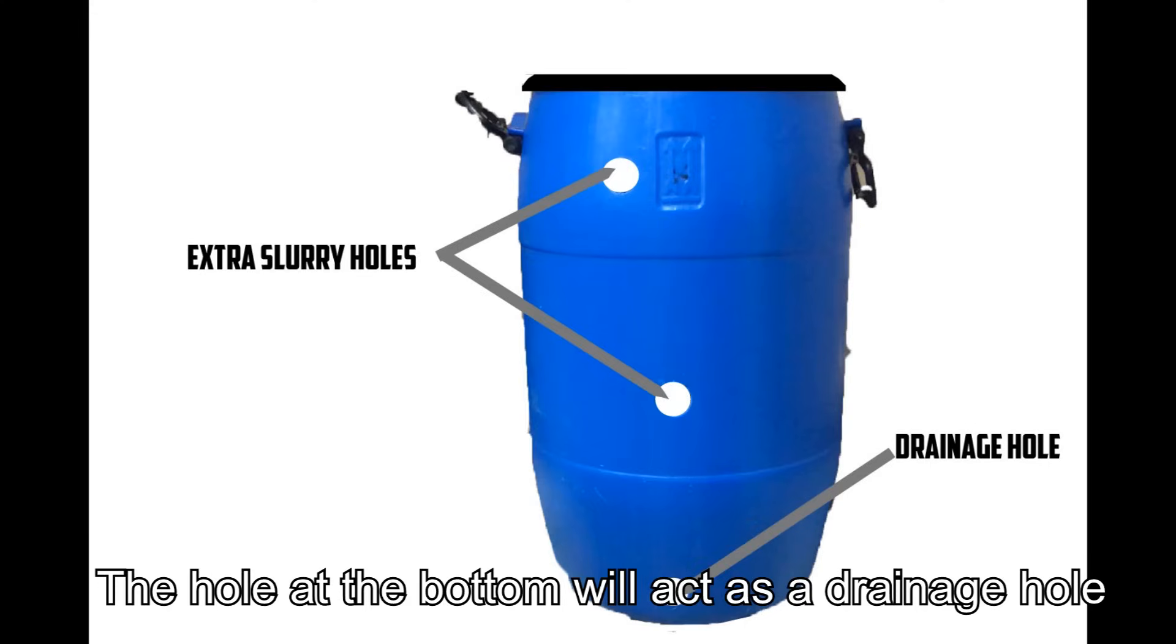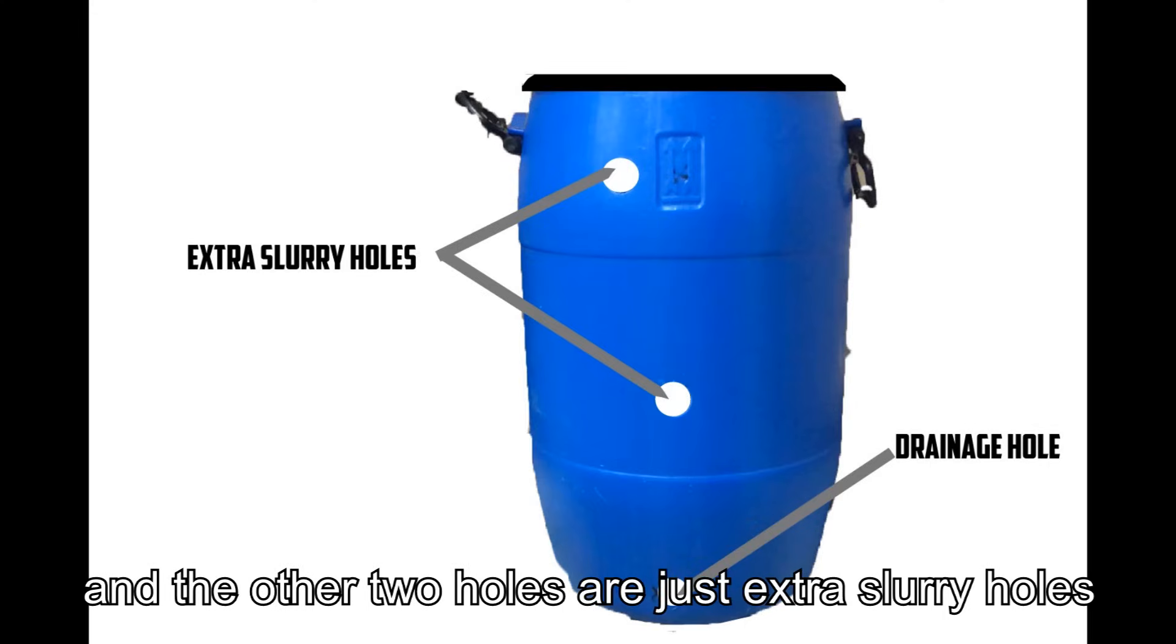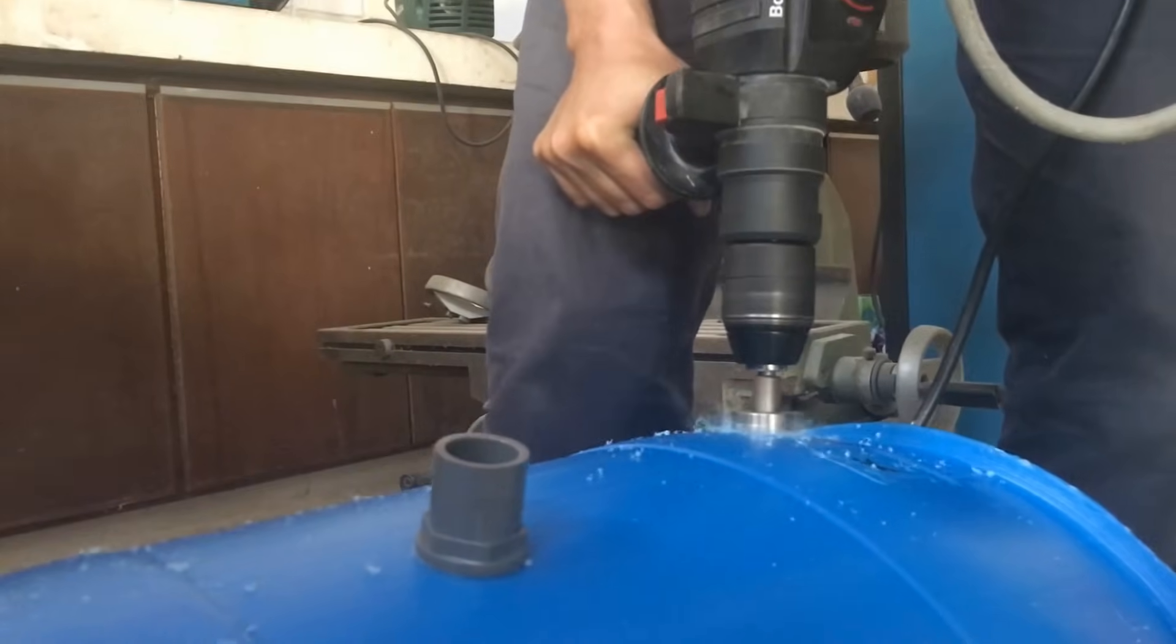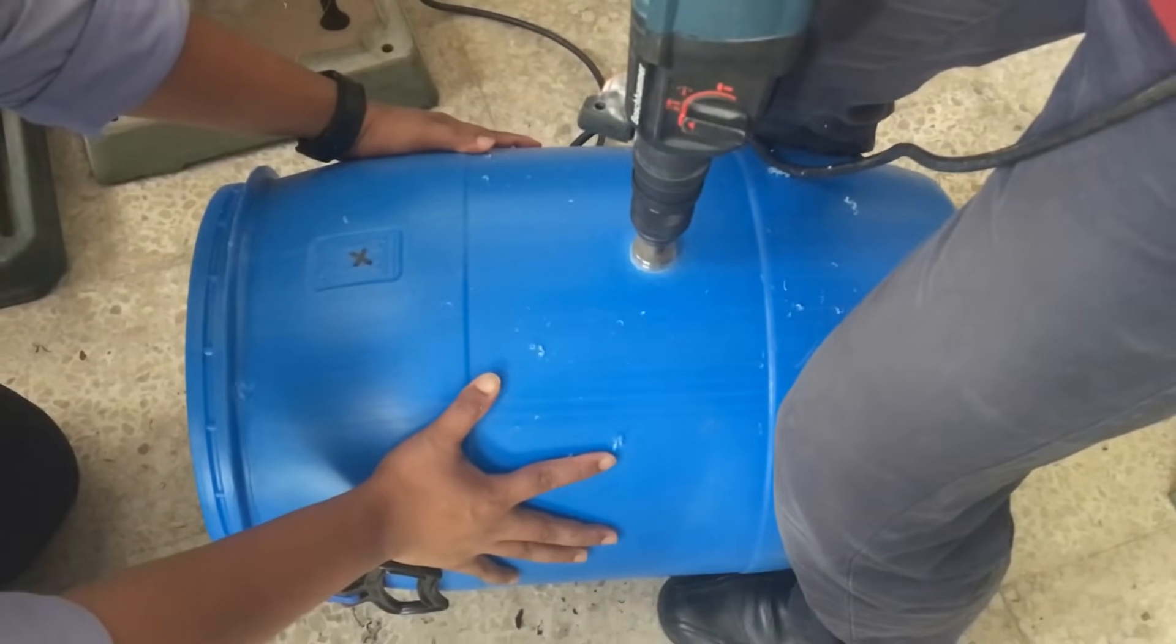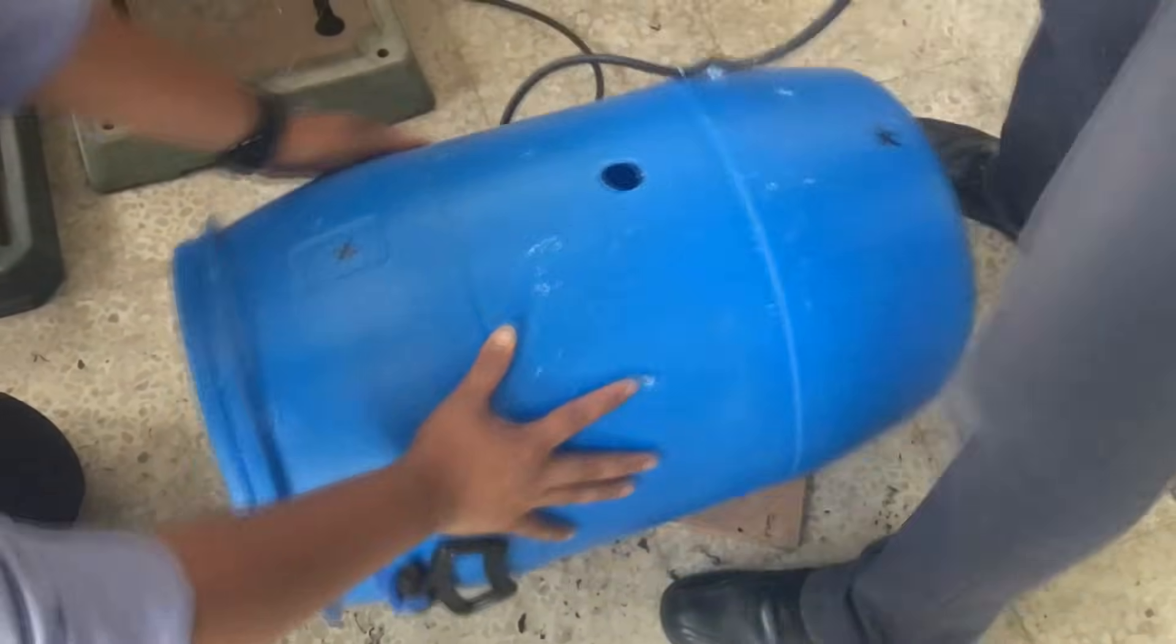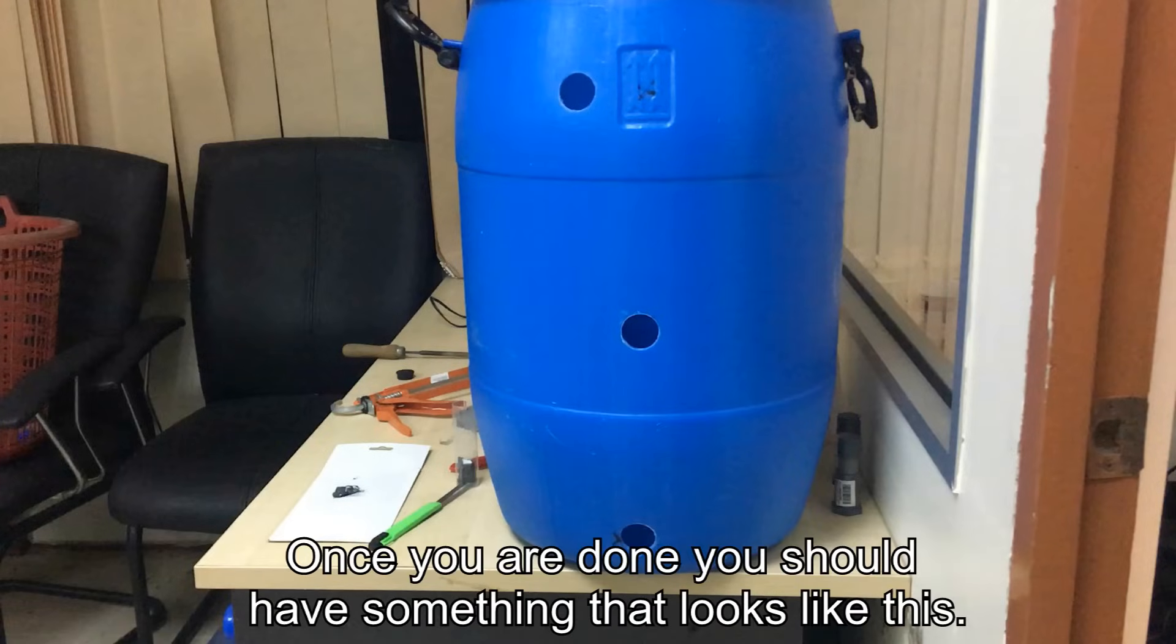The hole at the bottom will act as a drainage hole and the other two holes are just extra slurry holes. So let's continue drilling. Once you are done, you should have something that looks like this.